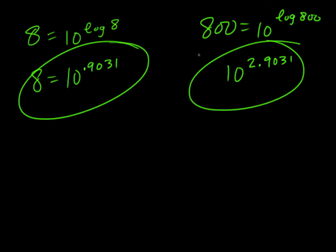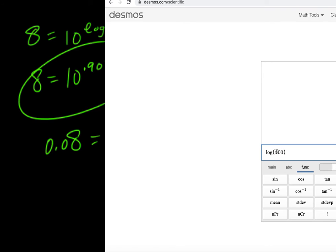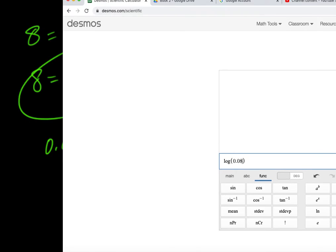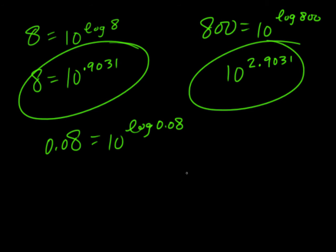And then 0.08 is going to be 10 to the log 0.08, and that answer is negative 1.097, so we'll just have 10 raised to the negative 1.0969.